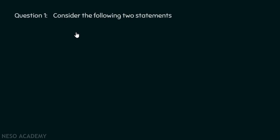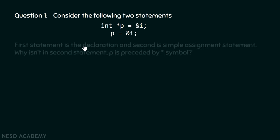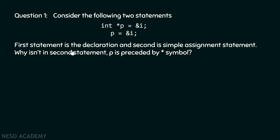Here is the first question. Consider the following two statements. In the first statement, we can see it is written `int *p = &i`. And in the second statement, it is written `p = &i`. The first statement is a declaration and the second is a simple assignment statement.